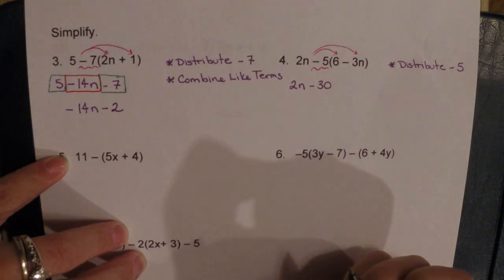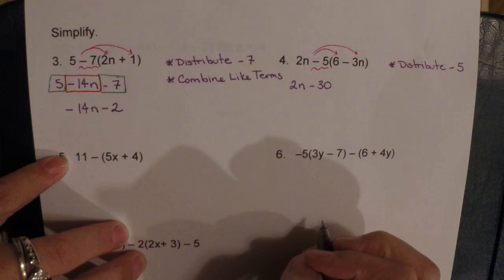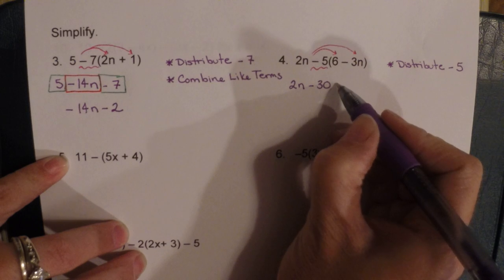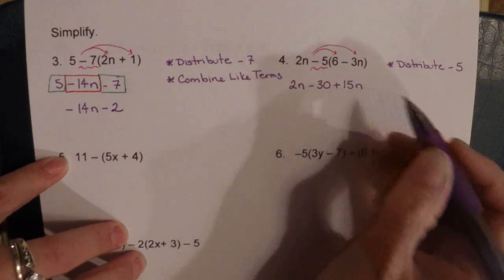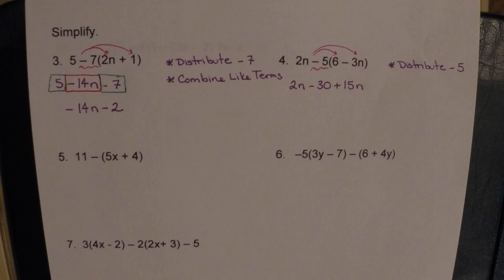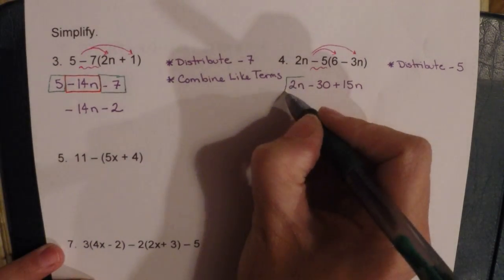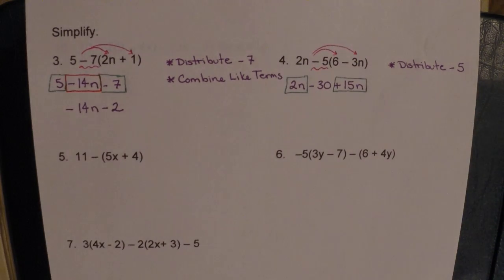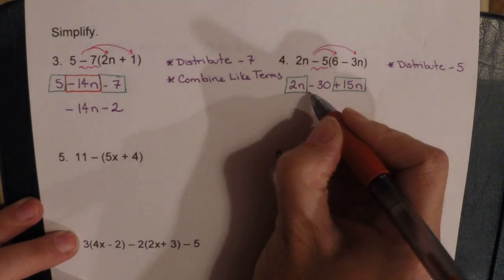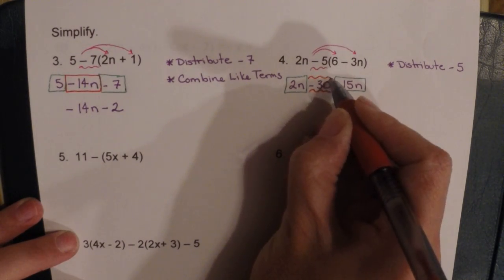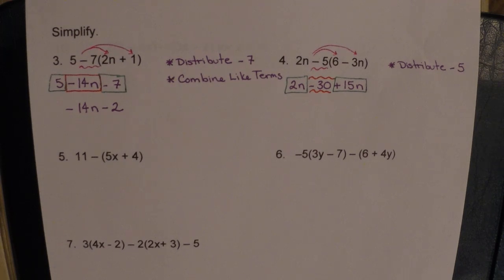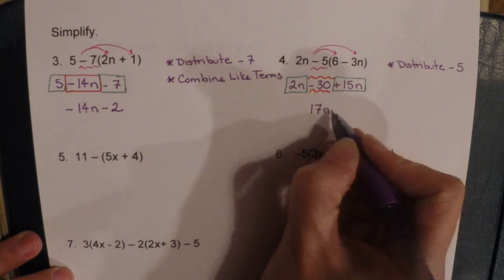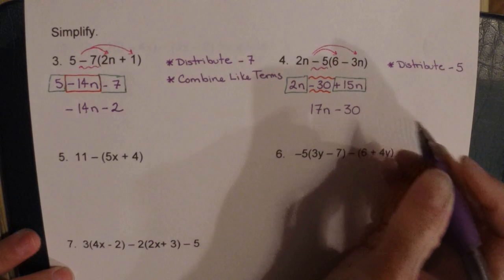If you're not sure of your multiplication tables, use a calculator. Negative five times negative three gives positive 15n. Now 2n does have a like term — positive 15n — and negative 30 is off by itself. Combining: 2n plus 15n is 17n, and then we have minus 30 at the end.